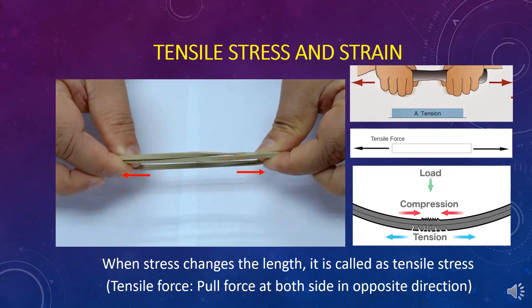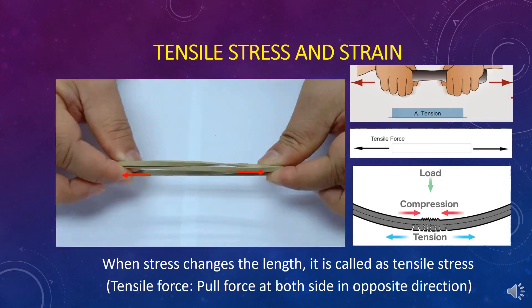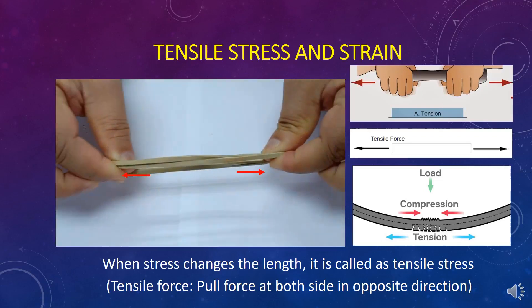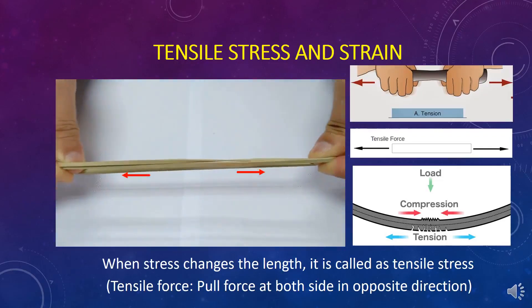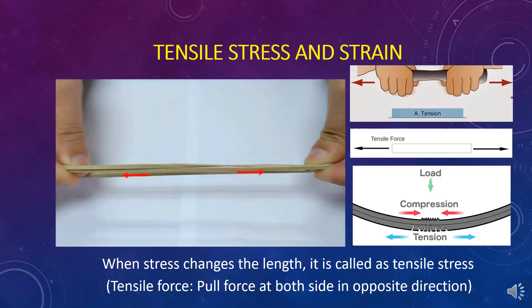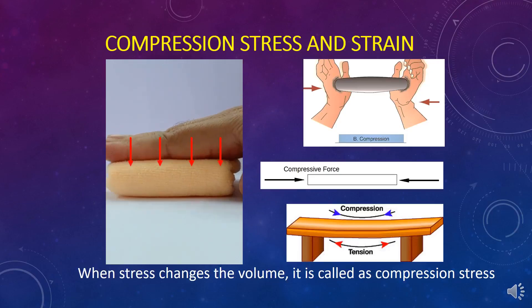What is the difference between tensile stress and compression stress? When stress changes the length, it is called tensile stress, whereas when stress changes the length, it is called compression stress.